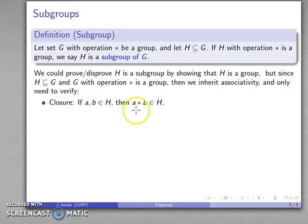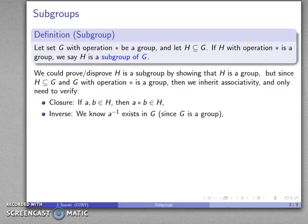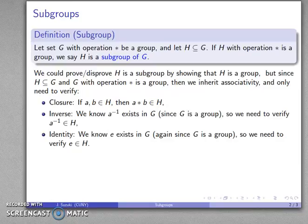If I have two things in H, I want to make sure that a star b is also in H. I need to verify that the inverse—we know that a inverse exists in G because G is a group, but I want to make sure that it exists in H because I want to say that H is going to be a group. So we need to verify that the inverse exists in H, and we need to have the identity. Again, we know that the identity exists in our group G, so we need to make sure that our identity exists in our group H.